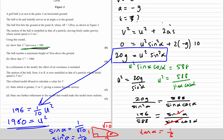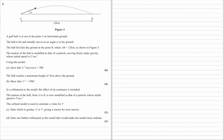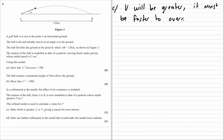In a refinement to the model, the effect of air resistance is included. The motion of the ball from A to B is modelled as a particle whose initial speed is v. State which is greater, u or v. Because there is air resistance, in order to travel the same distance the ball must be hit faster, so v is greater than u, because it must be faster to overcome the resistance.